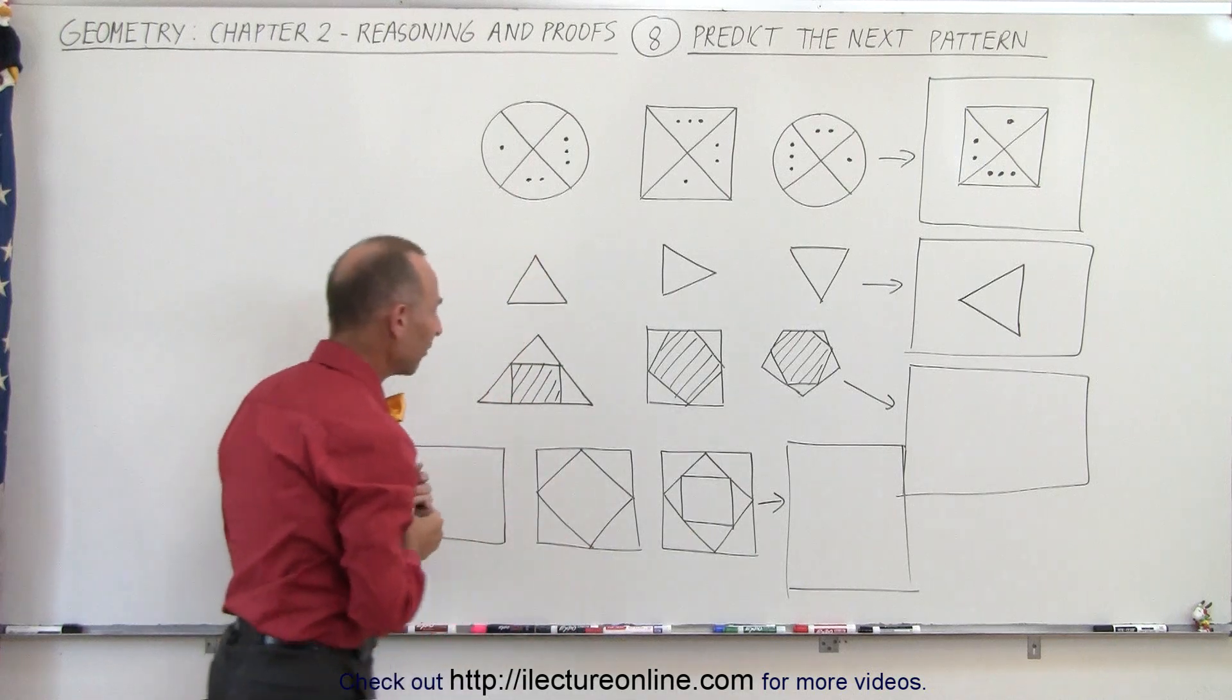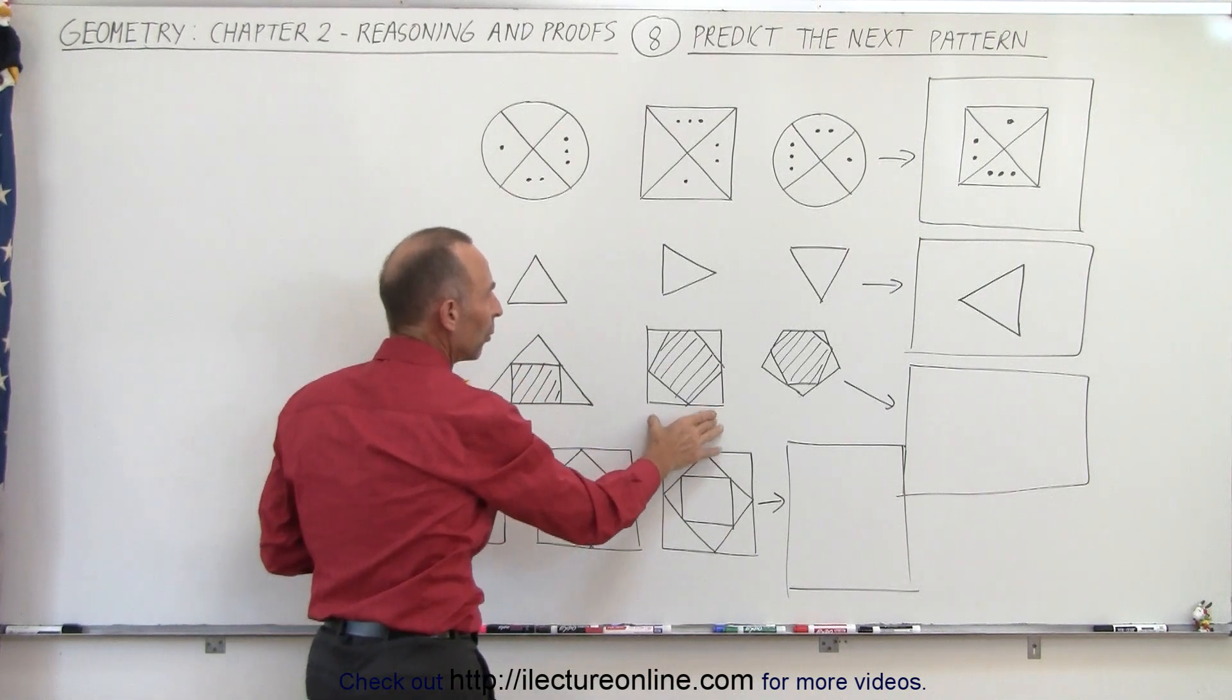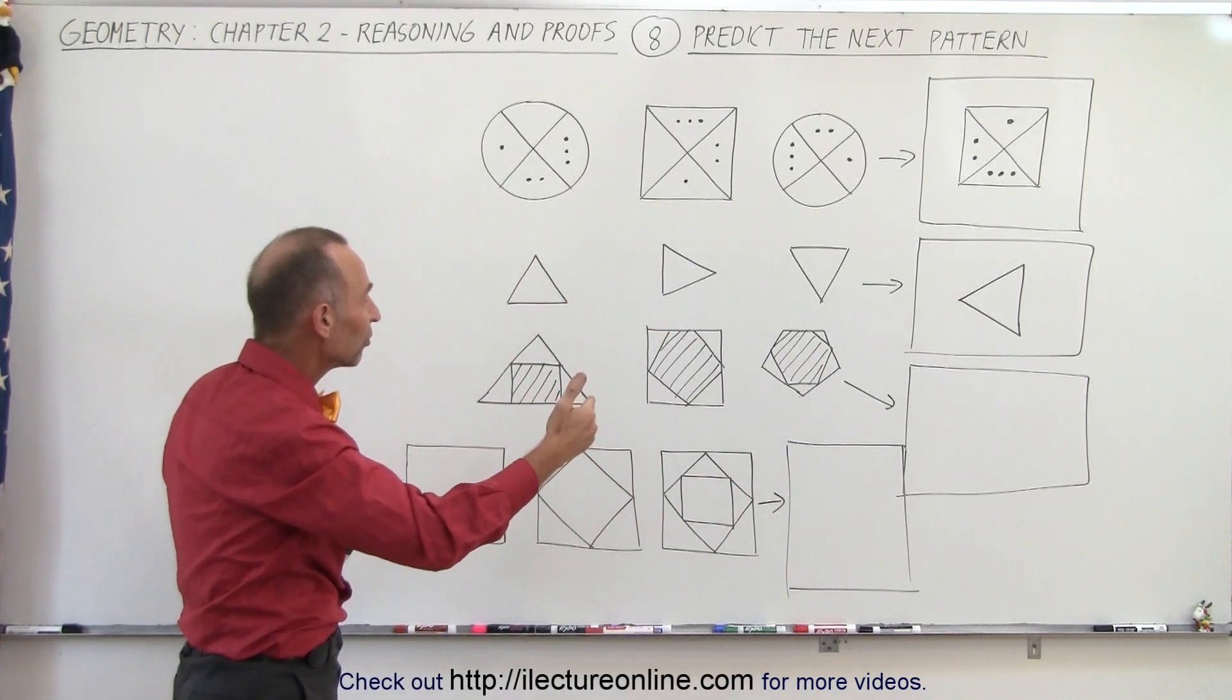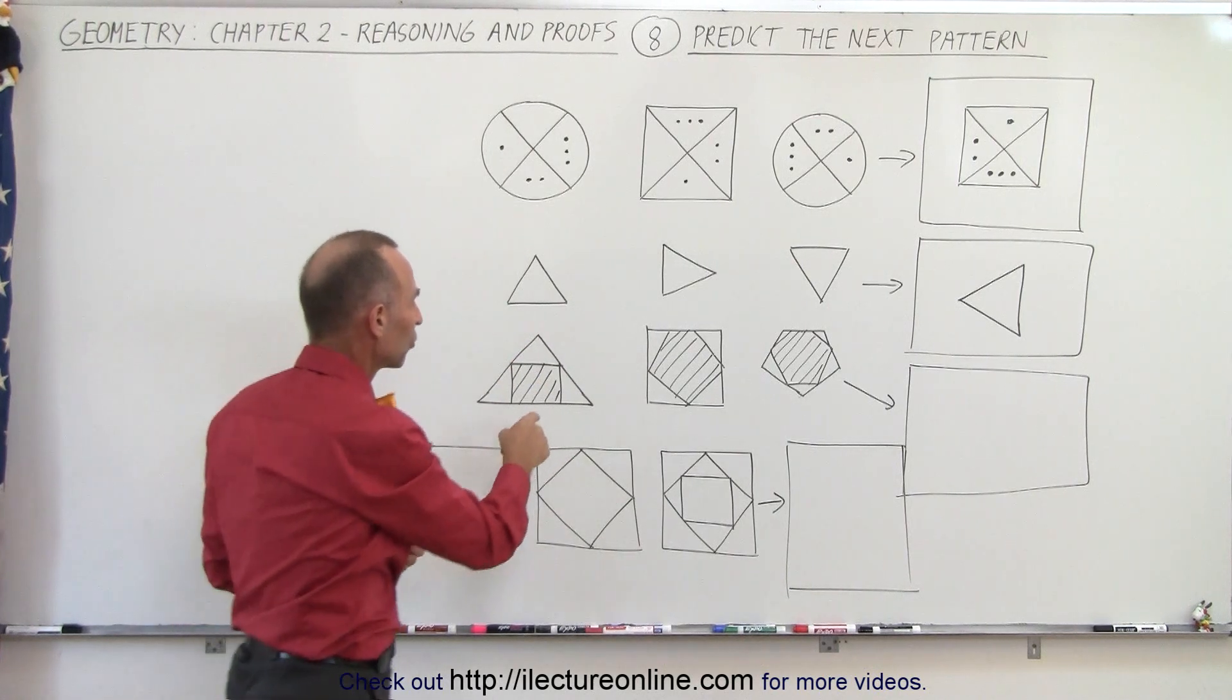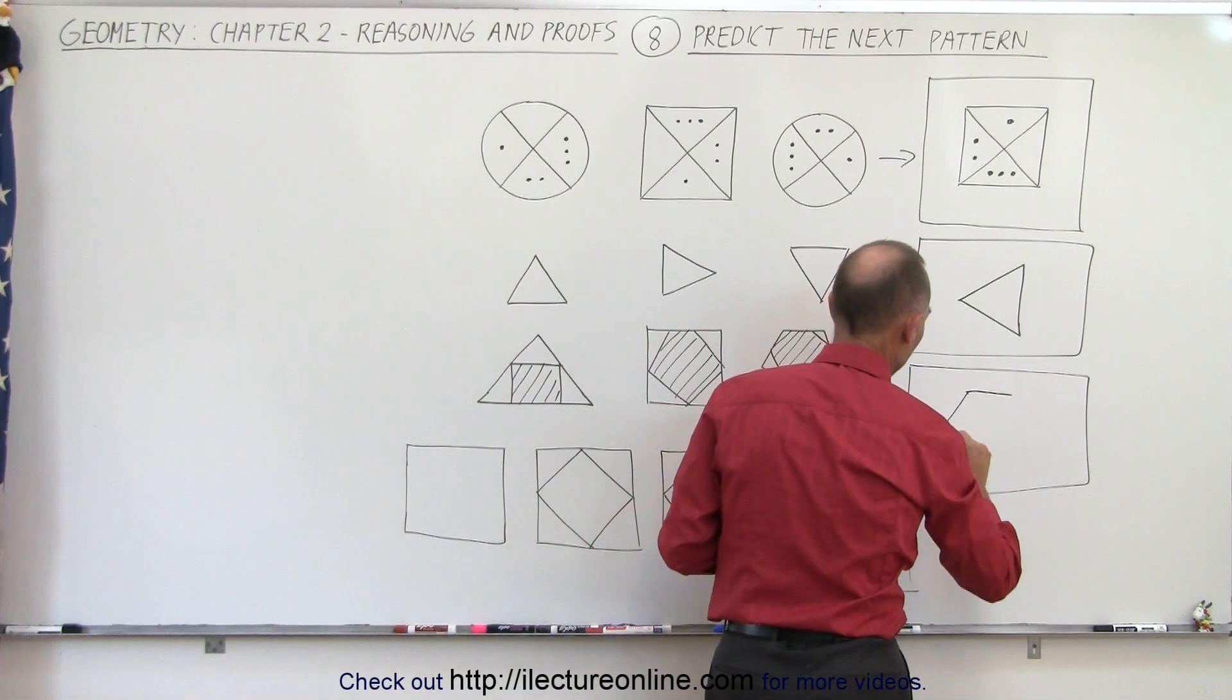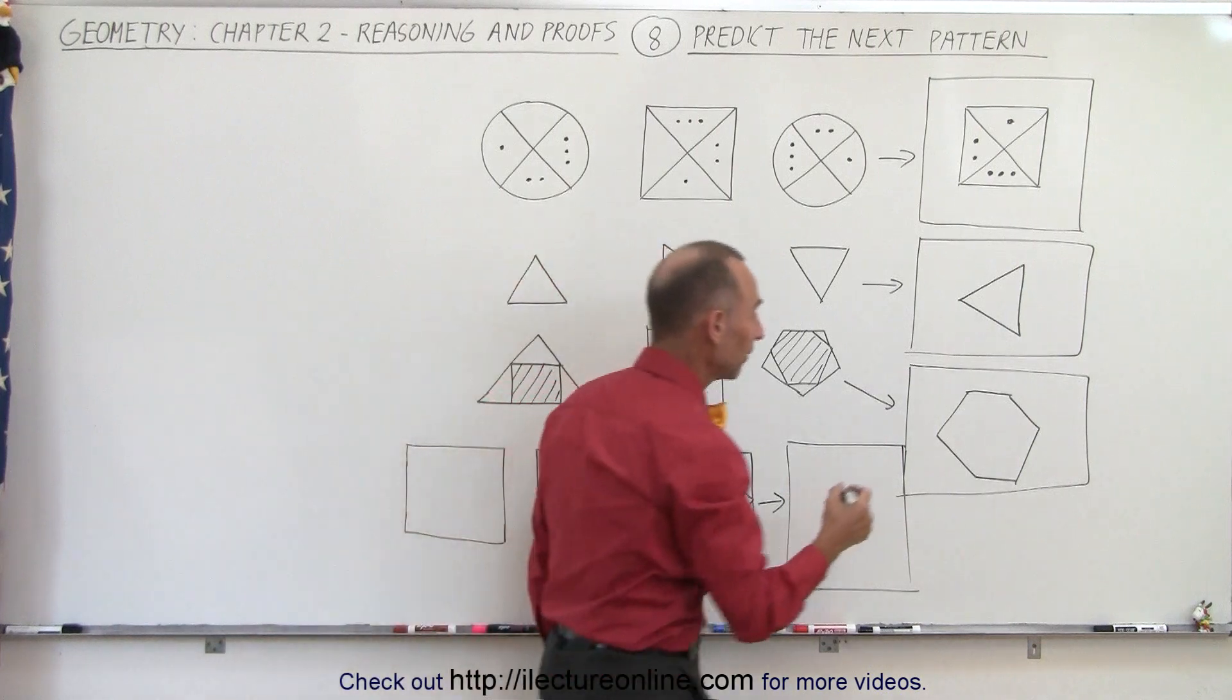On the next set we have two figures. We start with a triangle and a square inside that is shaded. Now we have a square with a pentagon inside and a pentagon with a hexagon inside. So it looks like the number of sides increases for the outside figure and the inside figure. So we have a triangle, a square, a pentagon. That means we'll end up with a hexagon over here. So there's a hexagon for the outside figure.